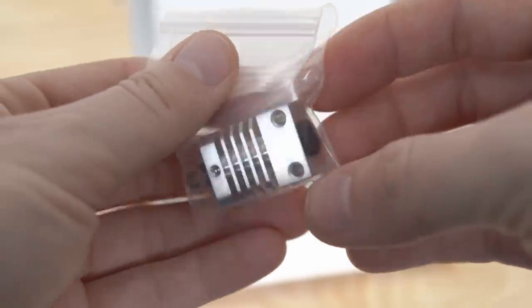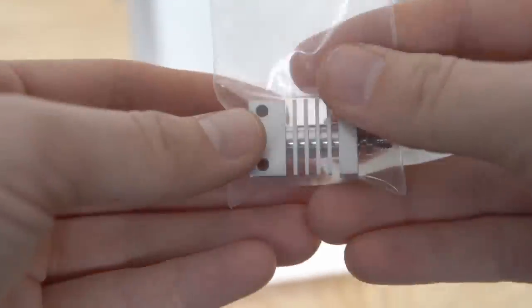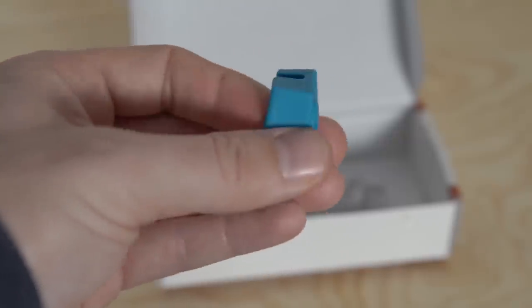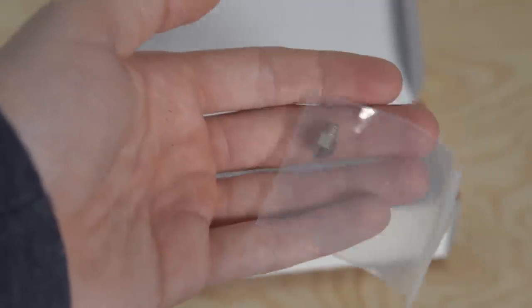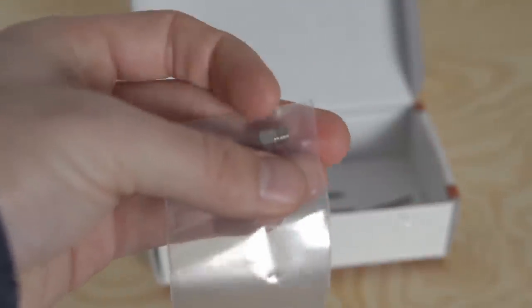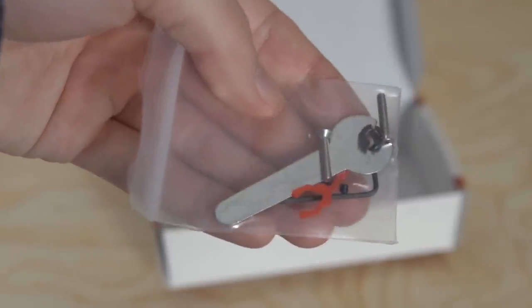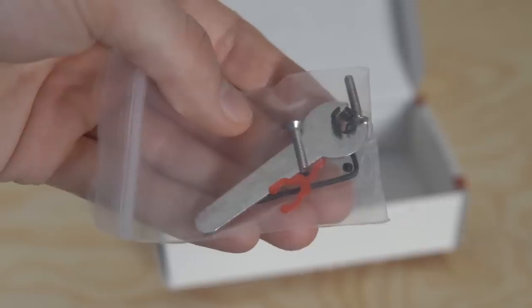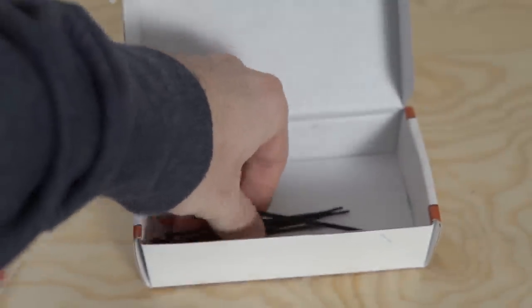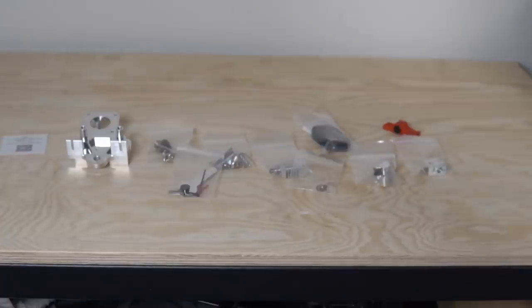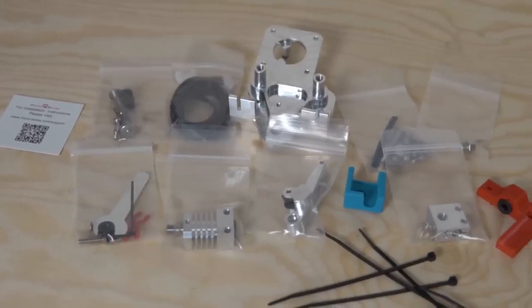First thing you want to do is make sure that all the parts are in the bag. There's nothing worse than starting on an upgrade to find out there's some screws missing. Micro Swiss has been really great and everything comes in nice neat little baggies. Overall the install should be somewhere around 30 minutes to tops an hour depending on how comfortable you are with the machine. In reality I think I could install it in about 20 minutes but this took me an hour since I was trying to record and get lots of different shots.